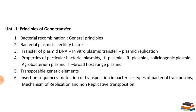Unit 1 covers what principles are responsible for gene transfer, both in vitro and in vivo, and what plasmids are involved — including bacterial plasmids, F plasmids, and R plasmids.